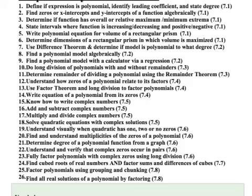In section 6 of chapter 7, it's called the Fundamental Theorem of Algebra, and we're going to cover quite a few objectives. You're going to notice here that we're going to address five of them, numbers 19 through 23.